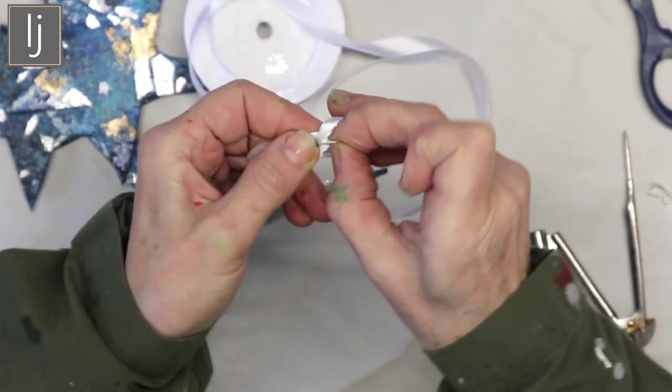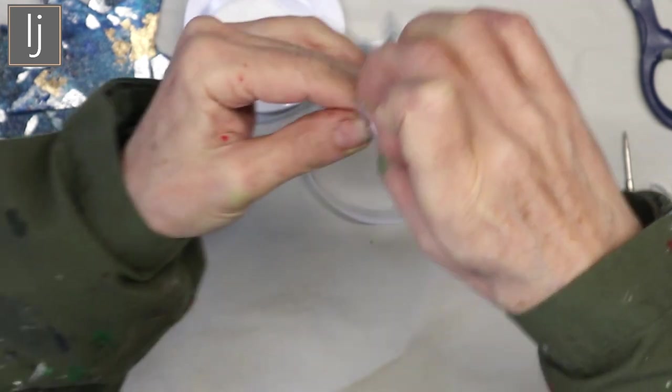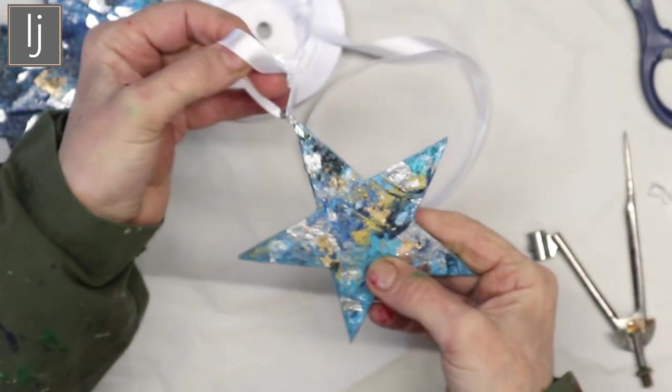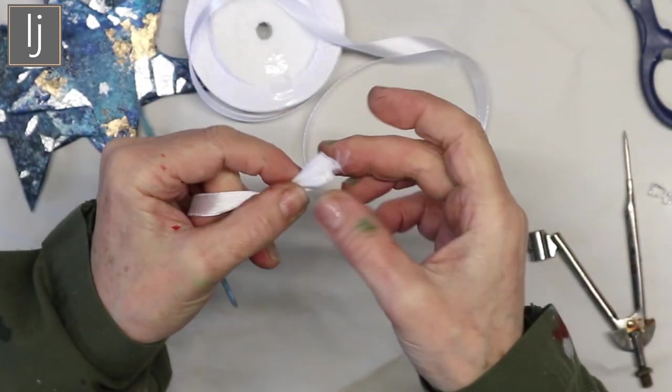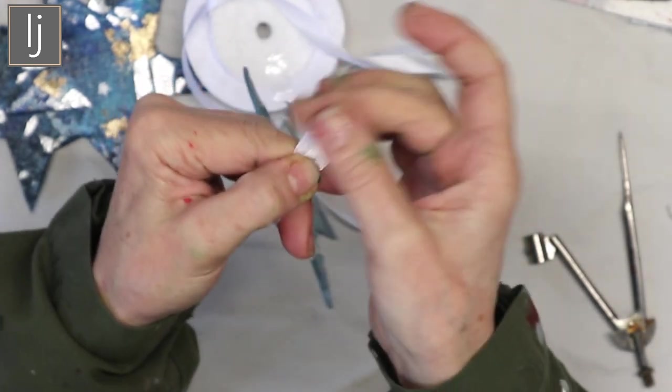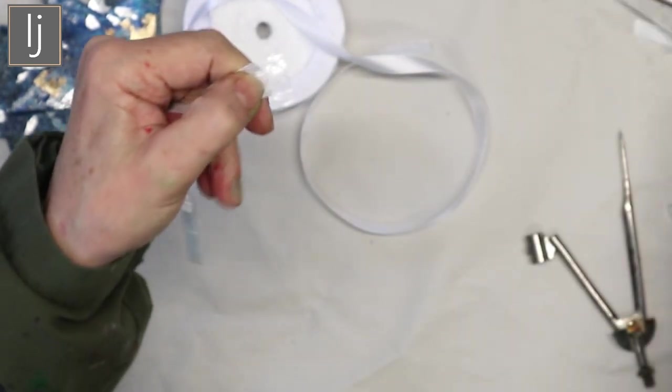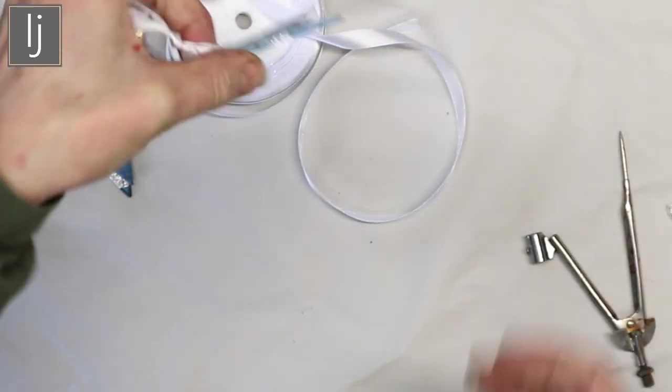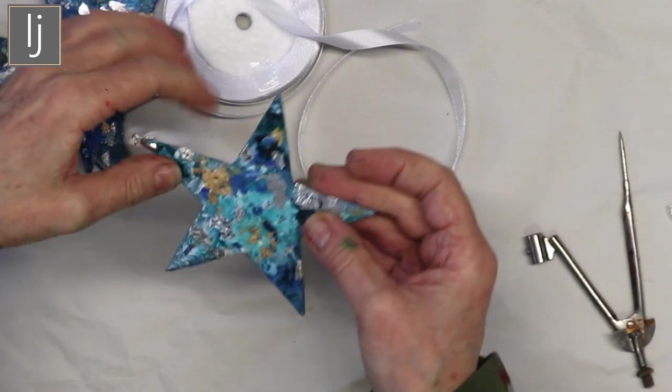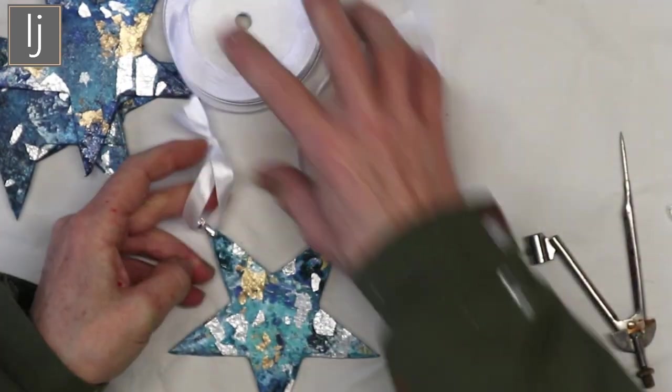I think what I'll do is just put a bit of gloss medium at the end of those, just so that it doesn't fray anymore. Then it'll just hang on the Christmas tree and you've got a set of five, or individual ones.